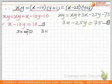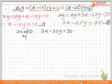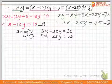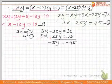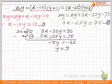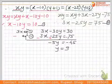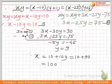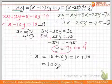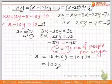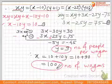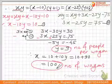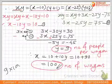Multiplying equation 1 by 3 gives 3x − 30y = 30. Subtracting equation 2 from this: (3x − 30y) − (3x − 25y) = 30 − 75, which gives −5y = −45, so y = 9. That means 9 people were sitting per wagon. From equation 1, x = 10 + 10y = 10 + 90 = 100. So there were 100 wagons. Total number of people is 100 × 9 = 900.